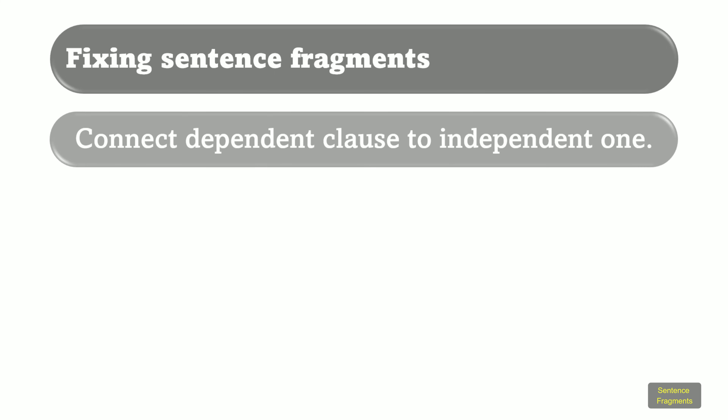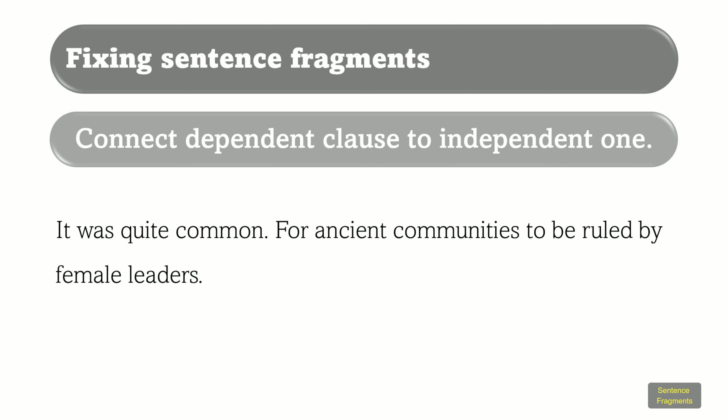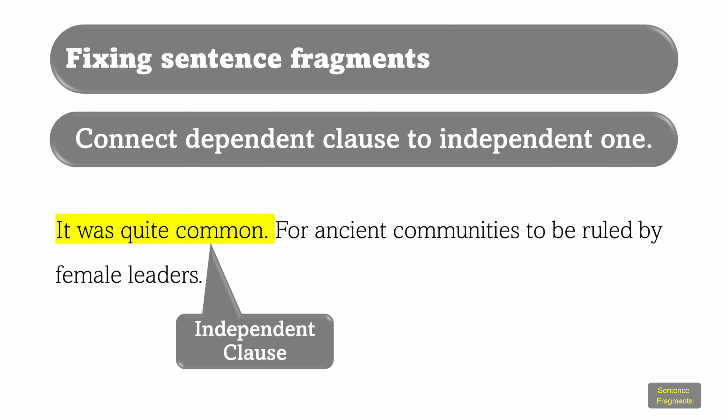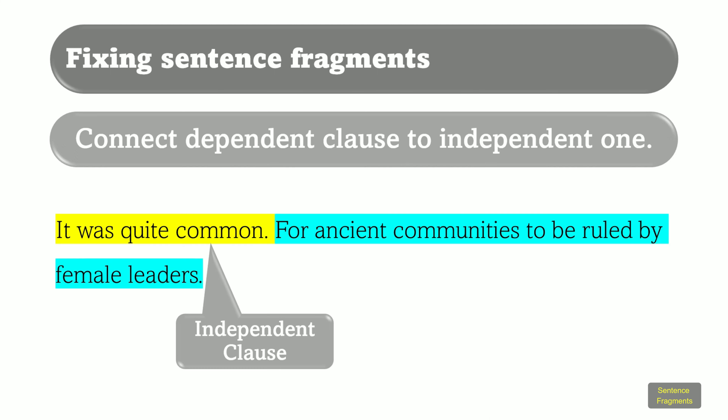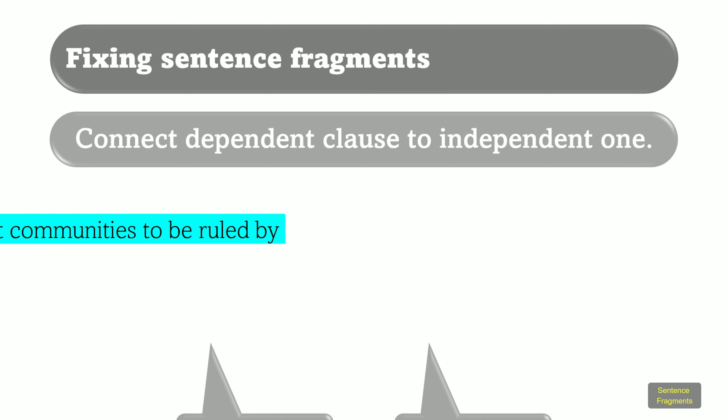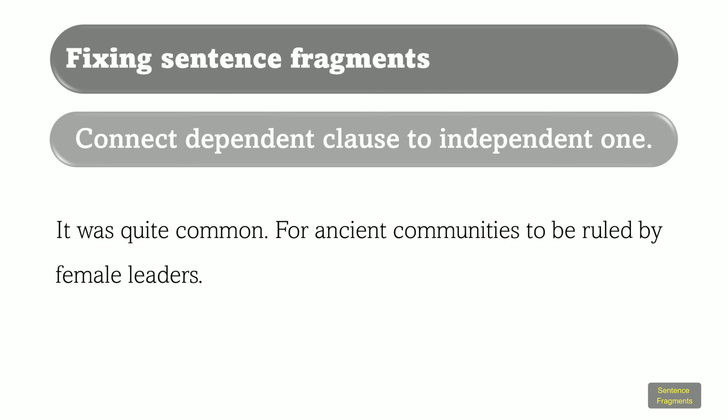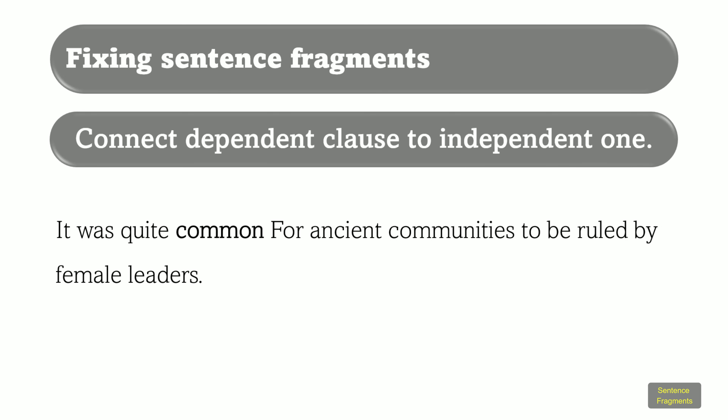If there is a dependent clause, connect it to a nearby independent clause. Here's an example: It was quite common. For ancient communities to be ruled by female leaders. The independent clause is 'It was quite common.' The dependent clause is 'for ancient communities to be ruled by female leaders.' This is a very easy fix — let's get rid of the period after the word 'common' and lowercase the word 'for.' Done.